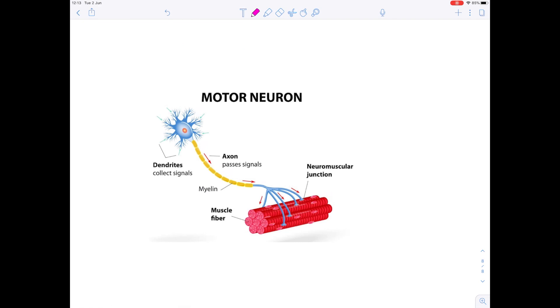Here we have a diagram of a motor neuron. So let's start by labelling it. We have the nucleus, which is found within the structure known as the cell body.